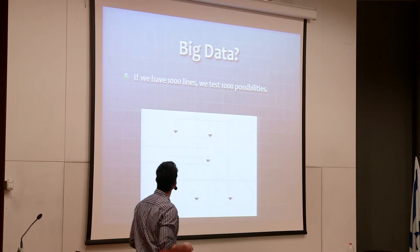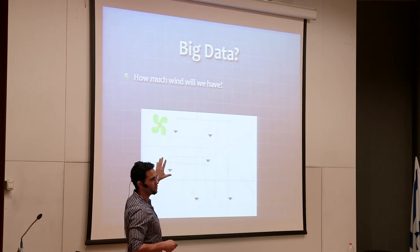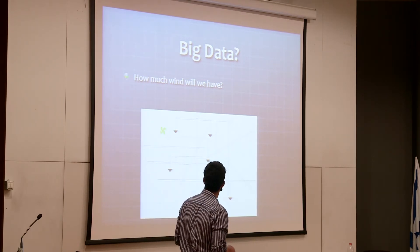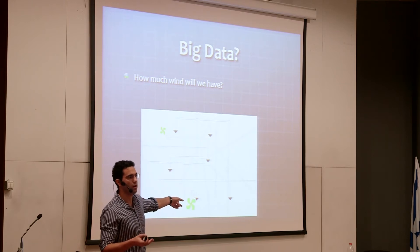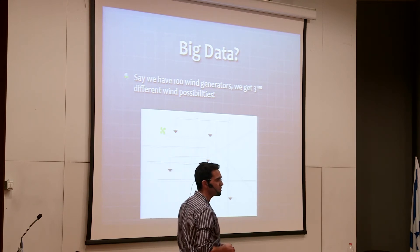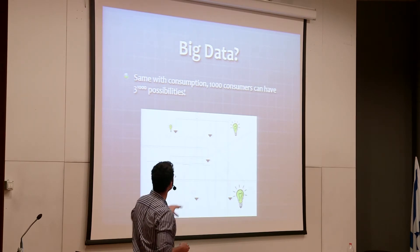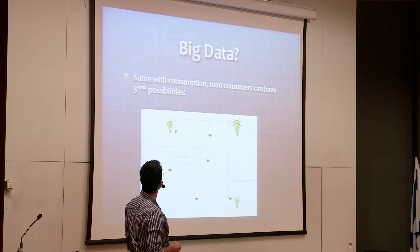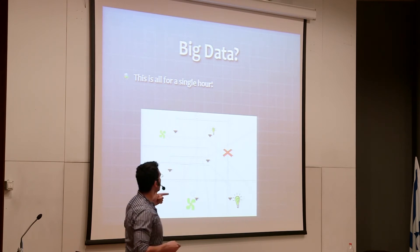Now add a wind generator that can operate at high, medium, or low levels. With 100 wind generators, we get 3 to the power of 100 different wind scenarios. Similarly, if we have 1,000 consumers each at different levels, that's 3 to the power of 1,000 consumer combinations. That's a huge problem — and that's only for a single hour.